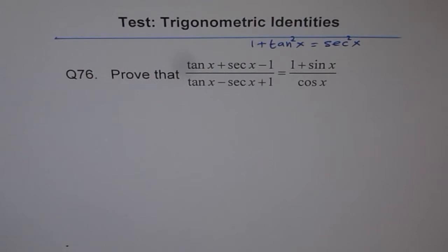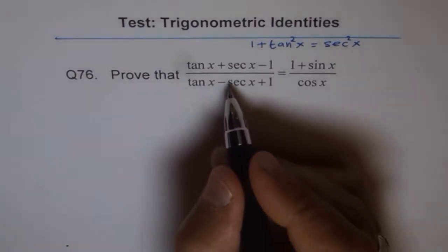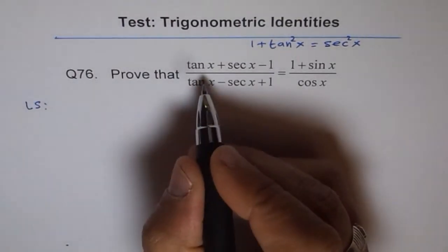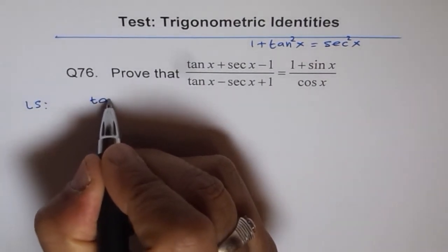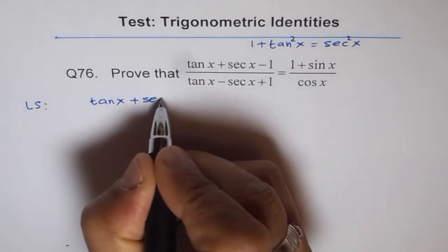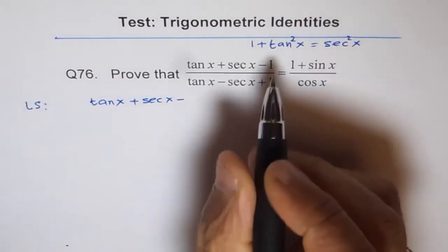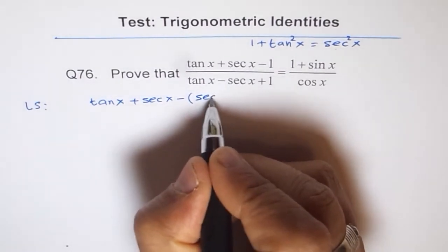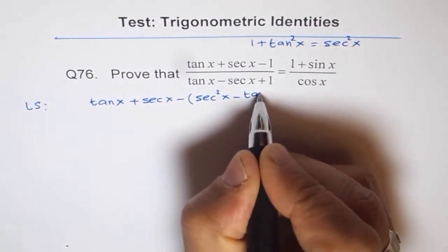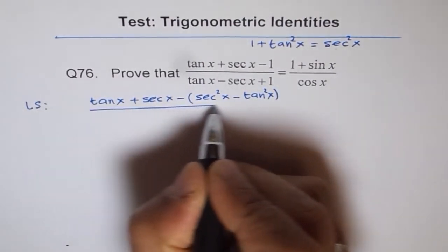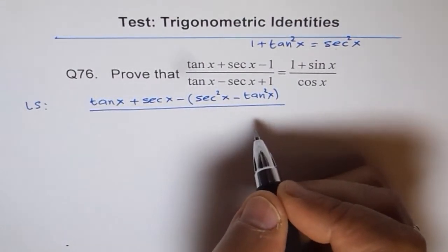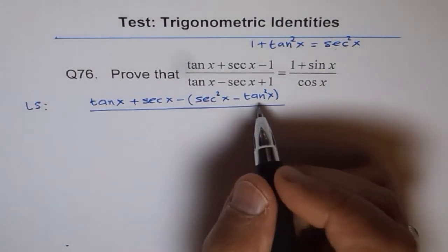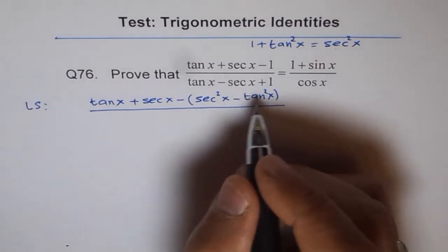We'll start with the left side. So we'll write this as tan x + sec x, and instead of 1, I'm writing sec²x - tan²x. So that's the substitution I've done—I've replaced 1 with sec²x - tan²x. The denominator I'm keeping as such: tan x - sec x + 1.